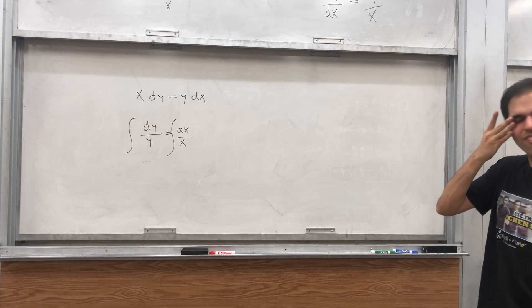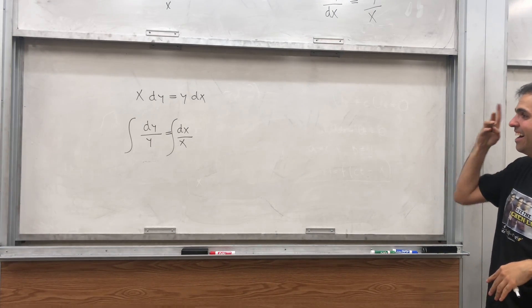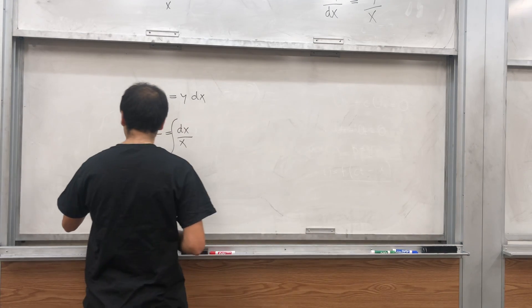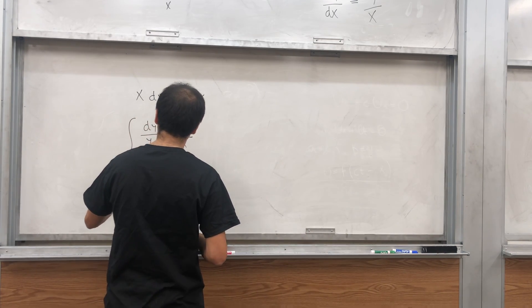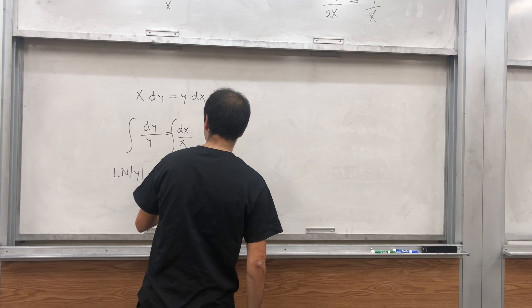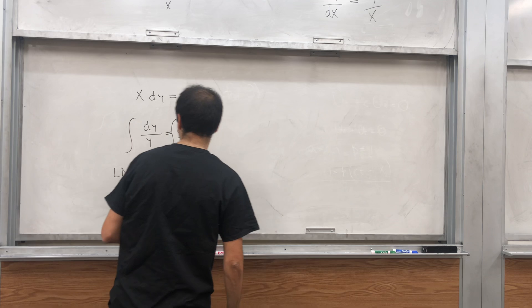Like a really cool, cool and non-rigorous differential equations technique. And then what we get is ln of absolute value of y equals ln of absolute value of x plus a constant.